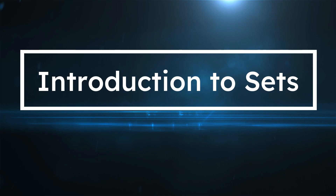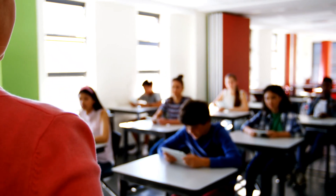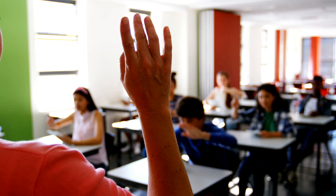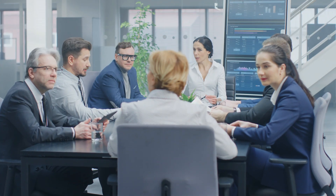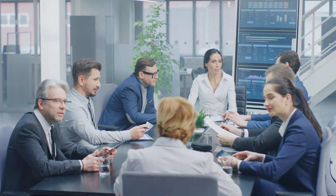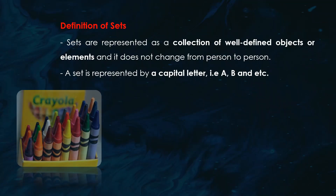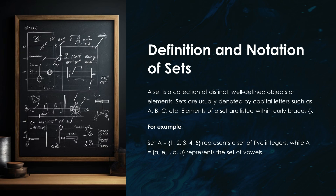Hey everyone, welcome back to another lesson. Today we're diving into a fundamental concept in mathematics: sets. Whether you're in high school or college, understanding sets is super important because it lays the groundwork for more complex topics. Simply put, a set is just a collection of well-defined objects or elements. A set is all about grouping things together — like a collection of your favorite books or a list of your top songs. We usually represent a set with a capital letter like A or B and list the elements inside curly braces, like: set A = {1, 2, 3, 4, 5}.